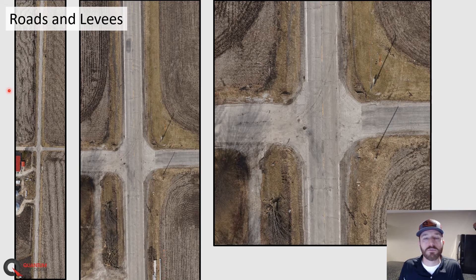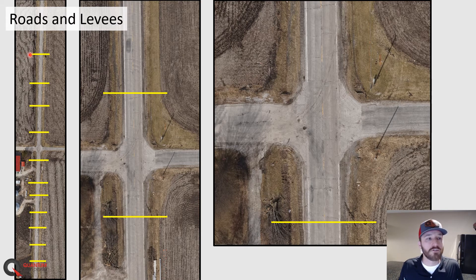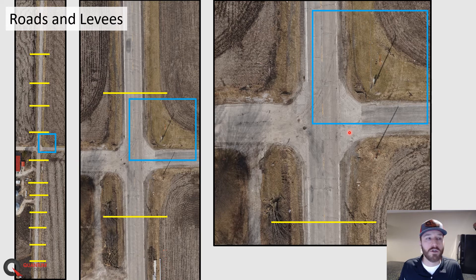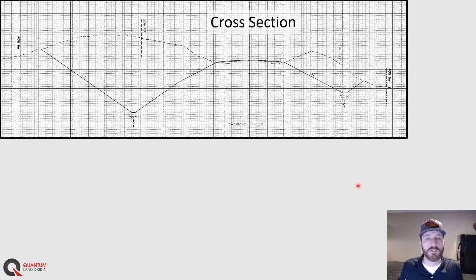Now let's talk about roads and levees. We'll use a different survey method to topo these called cross sections. A cross section means surveying across the road at certain intervals. These intervals can vary depending on how much the road goes up and down — they could be every 50 or 100 feet on a flatter road and as close as 5 or 10 feet with a lot of grade change or changes in the ditches. We'll also take a look at an intersection area, which will be more similar to the commercial site we did earlier — more of a broad area topo versus cross sections.